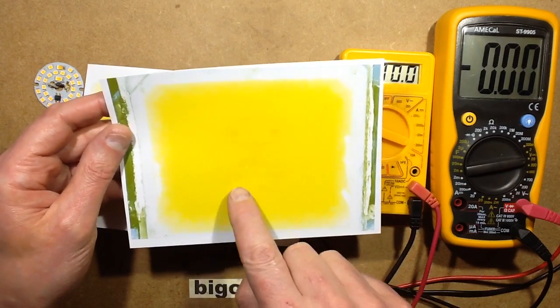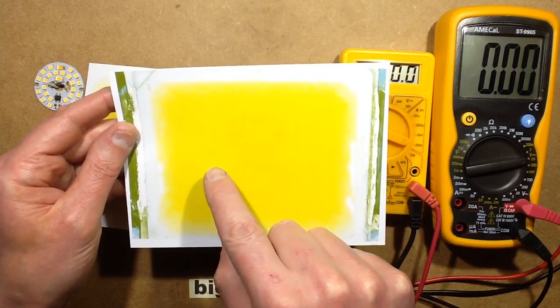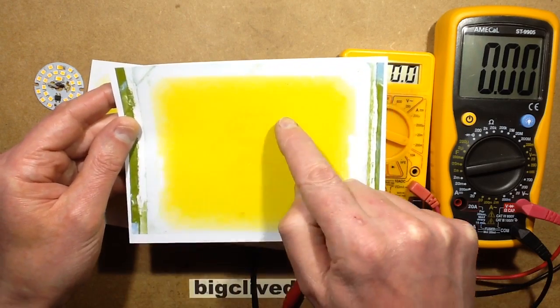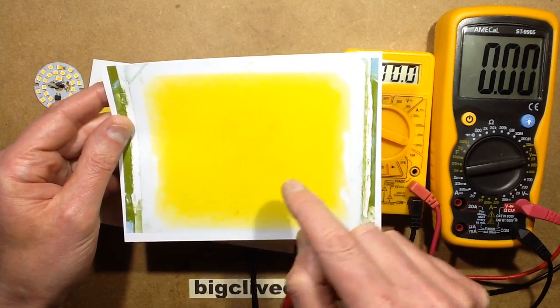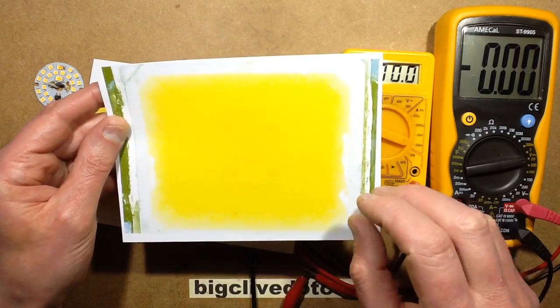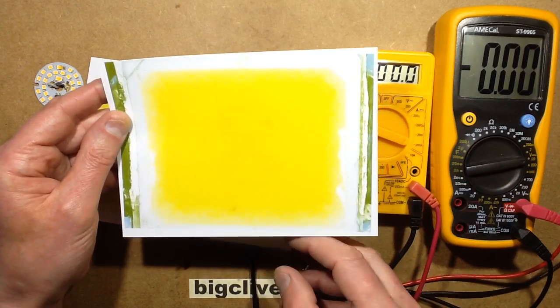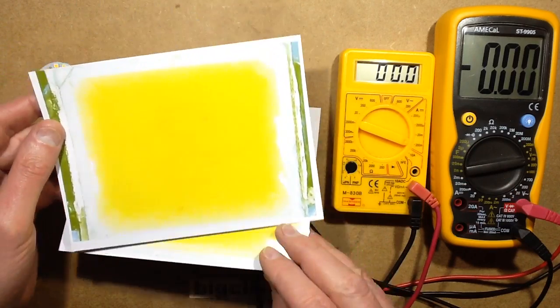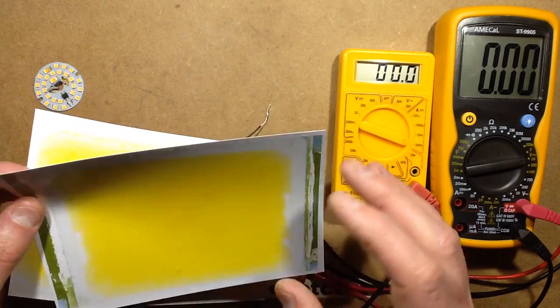The smaller LEDs have got two rectangular arrays - it's very faintly visible in there - with a wire bond going diagonally between the two and then one coming off the other end. These appear to be three LEDs in each of these little blocks, so giving six LEDs per LED package.